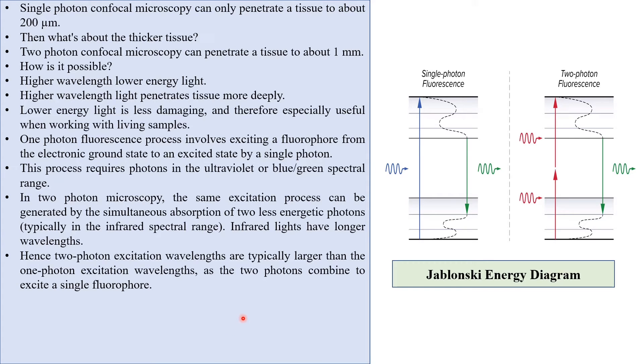Infrared lights have longer wavelengths. Hence, two photon excitation wavelengths are typically larger than one photon excitation wavelengths, as the two photons combine to excite a single fluorophore.